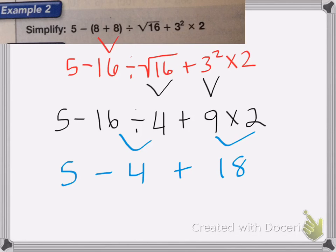All right, so now I'm going to add and subtract from left to right. So five minus four is one plus 18 is equal to 19.